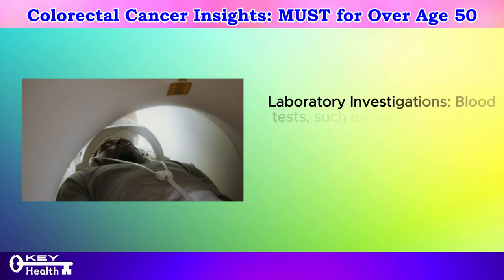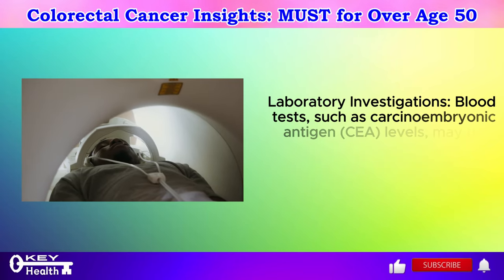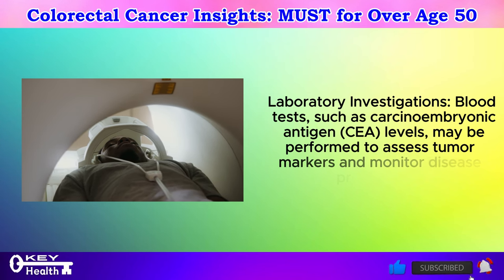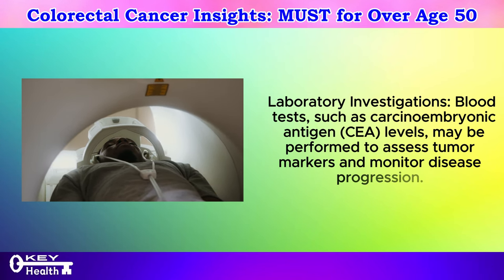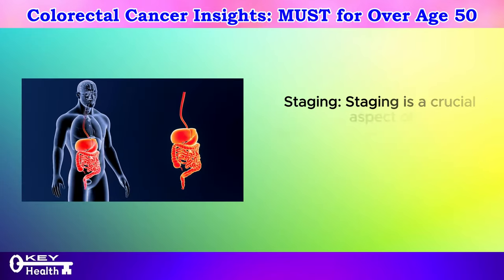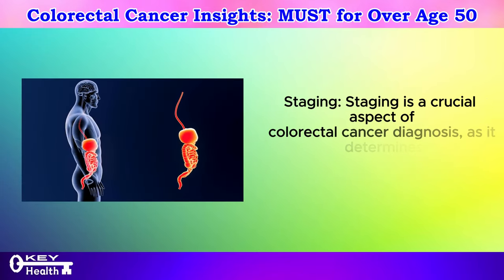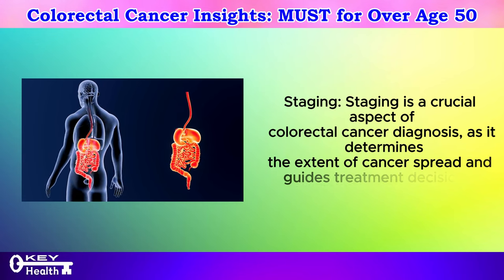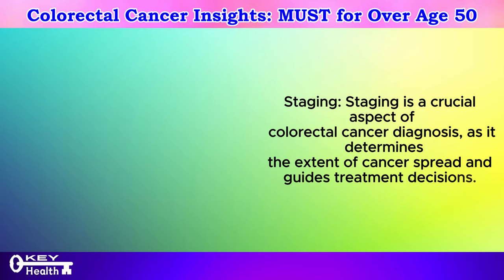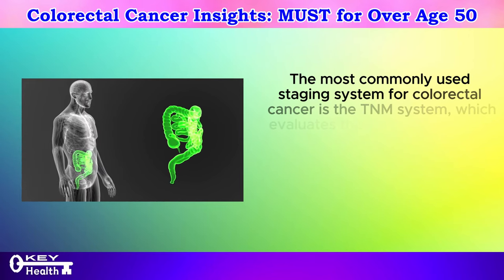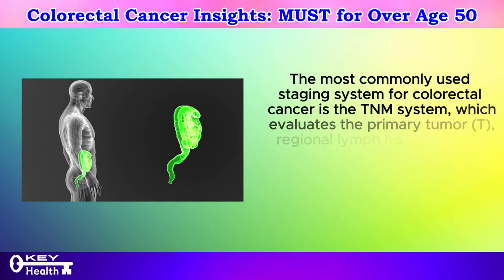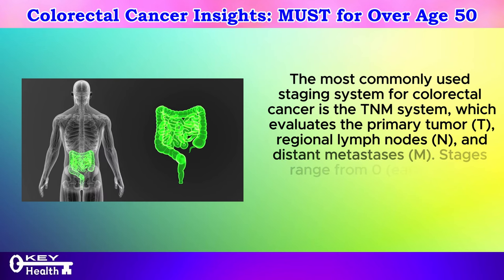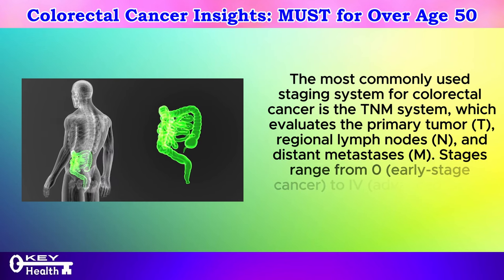Step 5: Laboratory investigations. Blood tests — such as carcinoembryonic antigen (CEA) levels — may be performed to assess tumor markers and monitor disease progression. Staging is a crucial aspect of colorectal cancer diagnosis, as it determines the extent of cancer spread and guides treatment decisions. The most commonly used staging system is the TNM system, which evaluates the primary tumor (T), regional lymph nodes (N), and distant metastases (M).